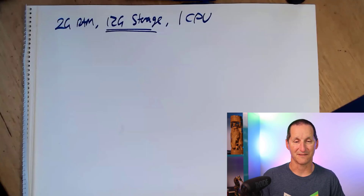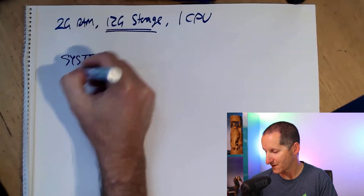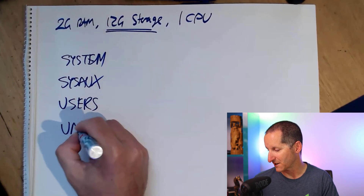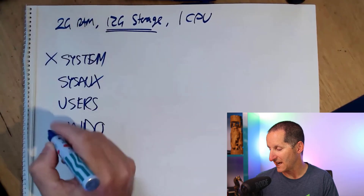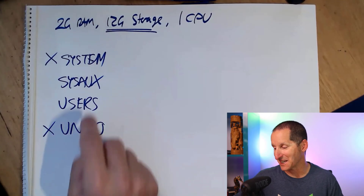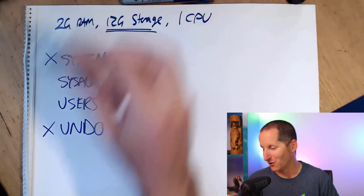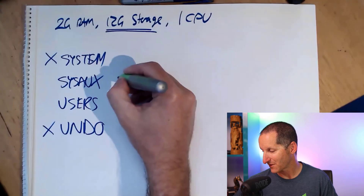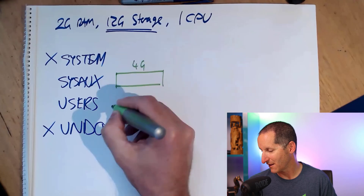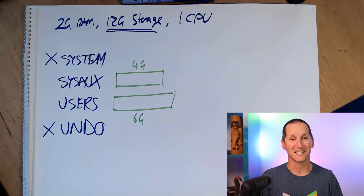What we do instead is keep an eye on the data file sizes. In a typical Express Edition install you've got SYSTEM, SYSAUX, USERS, and UNDO. We don't generally look at SYSTEM or UNDO in terms of enforcing the space limit. The way we measure it is: the total sum of all data files — say four gig plus six gig — cannot exceed 12 gigabytes.